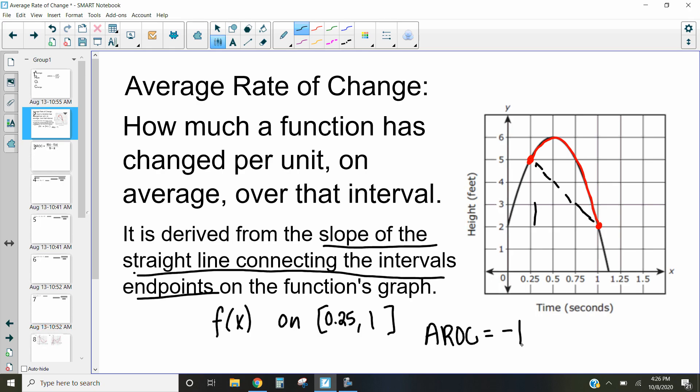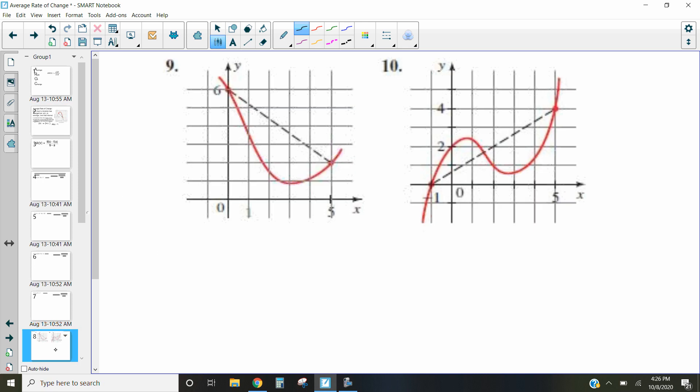So let's first start by finding the average rate of change when we're given a graph. So just like in the previous problem, here we are looking at the average rate of change between these two points. Now here there are two points that we can look at.